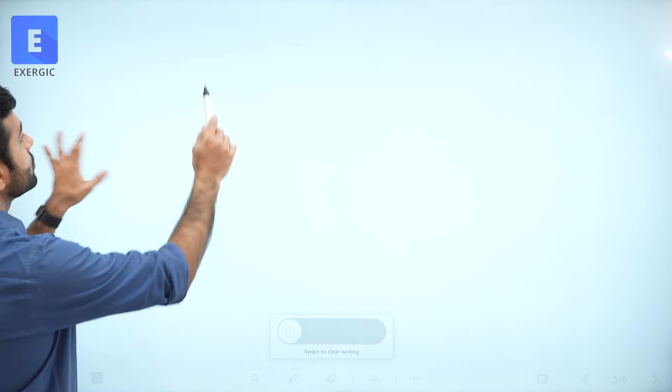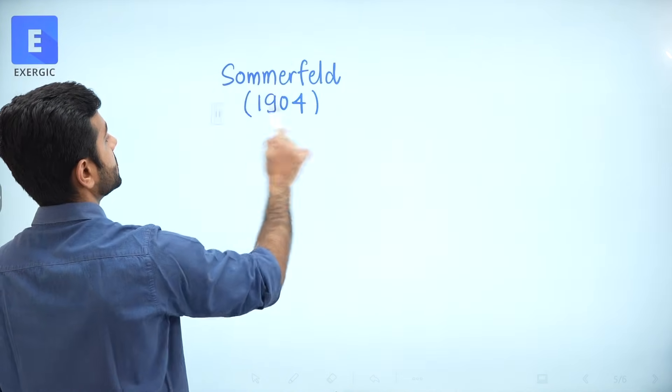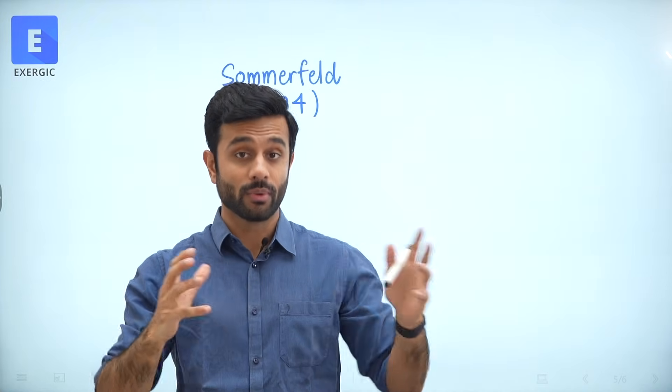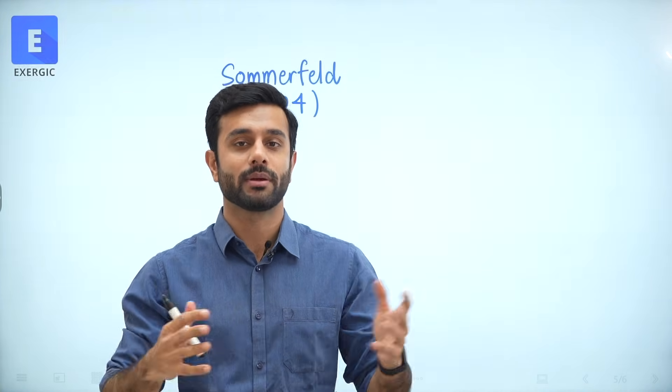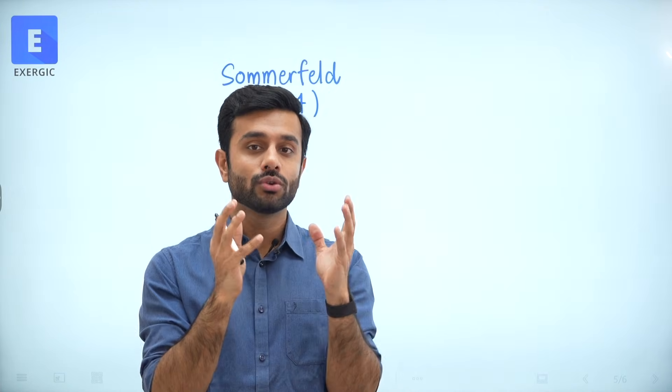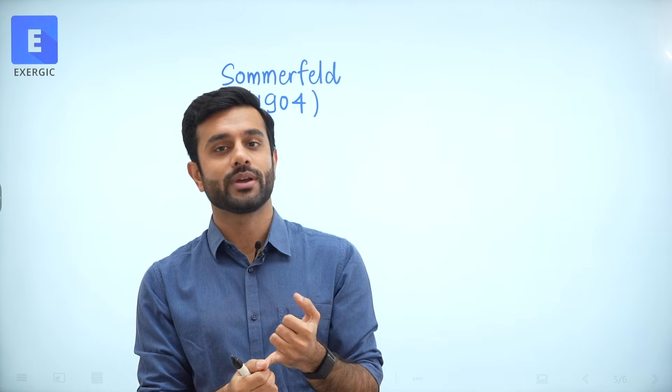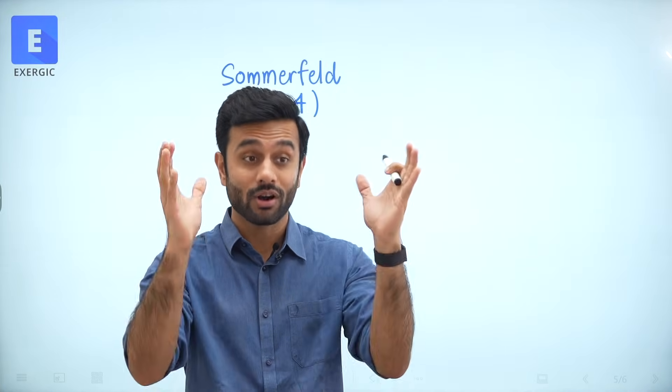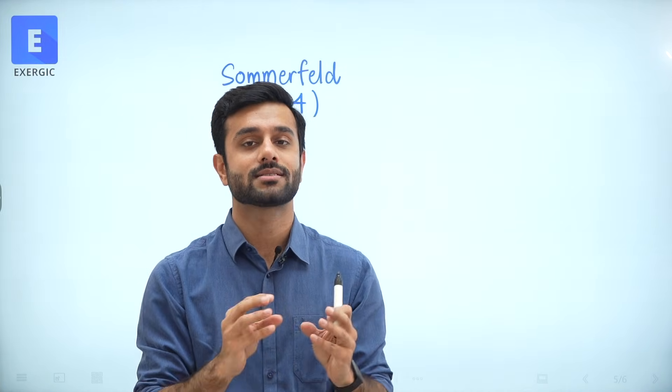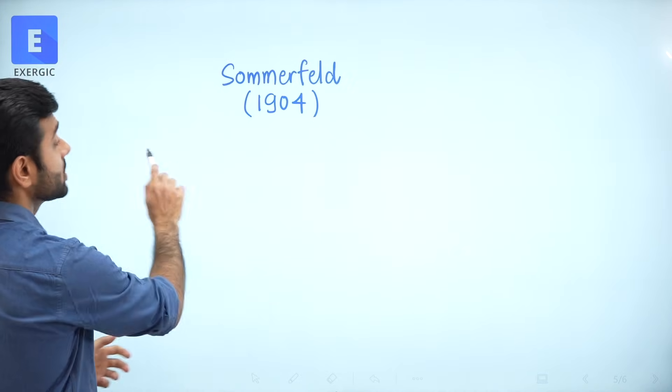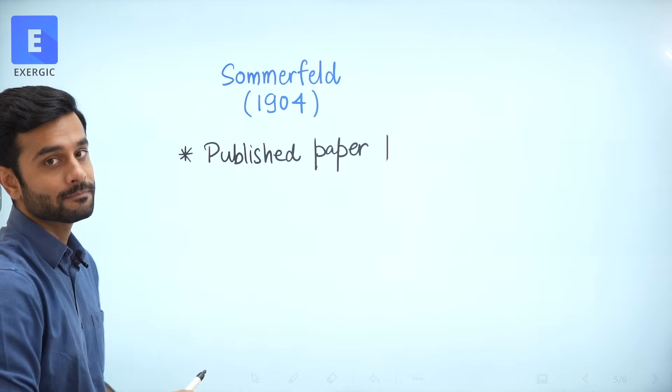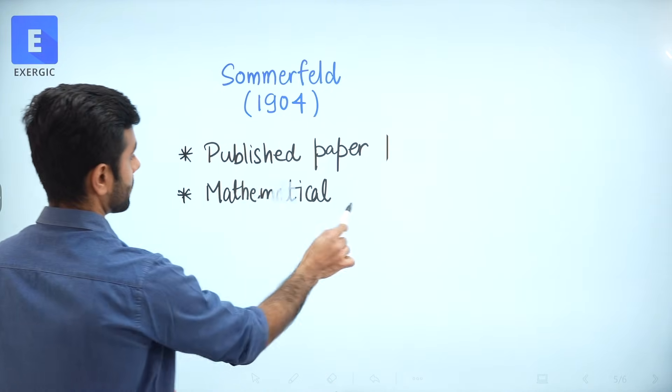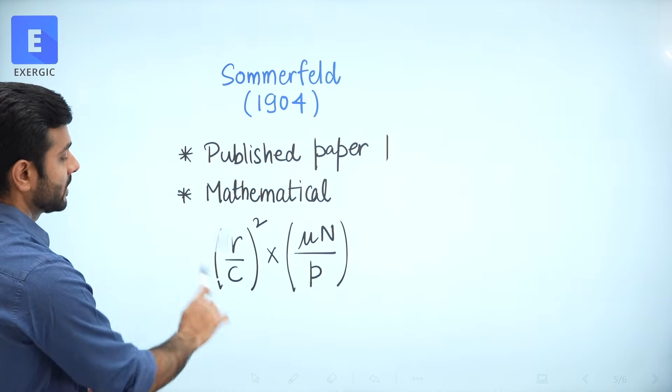This brings us to the main part. That if a question comes in exam and it is asking you Bearing Characteristic Number, which formula will you use? Will you use this formula mu n by p or you can say this formula which is there in IIT Kharagpur lectures or will you use this formula which is there in IIT Delhi lectures? Contradiction. And even if you use any one of them, chances are it may get challenged.